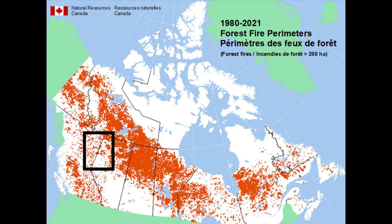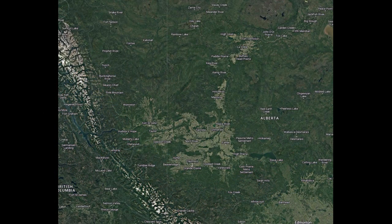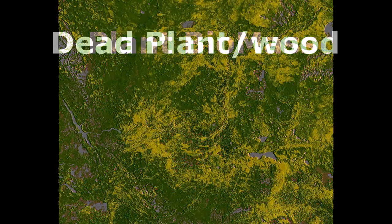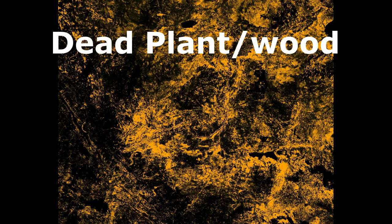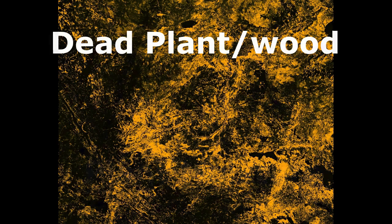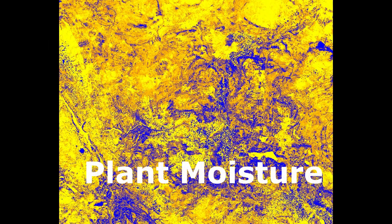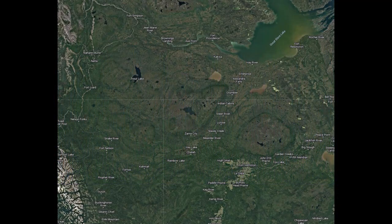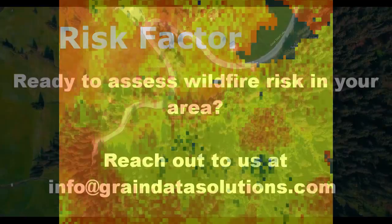Using time series of satellite images, we assess three factors: how much biomass is available in the form of live vegetation, how much dead biomass is on the ground, and how much moisture exists in plants. On top of that, we add temperature and precipitation patterns to build a real-time risk factor for wildfire using our climate risk and machine learning models.